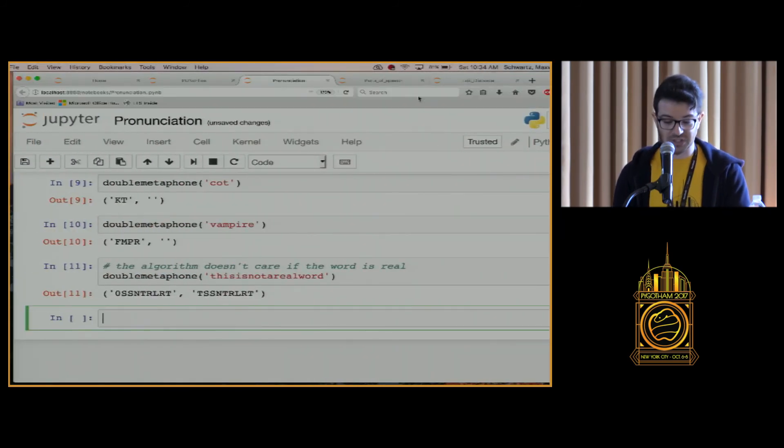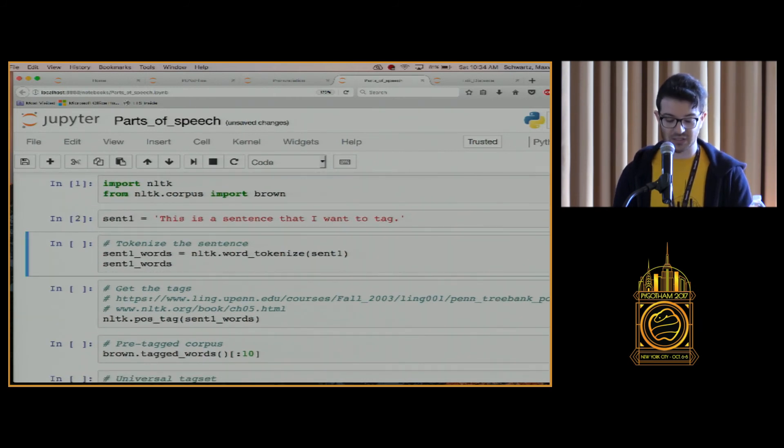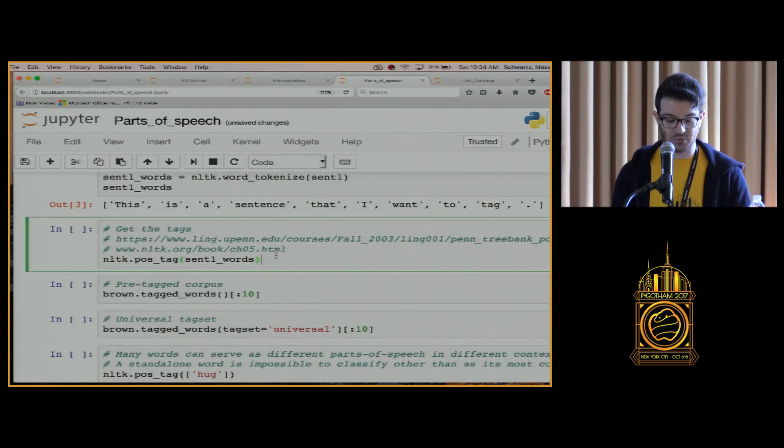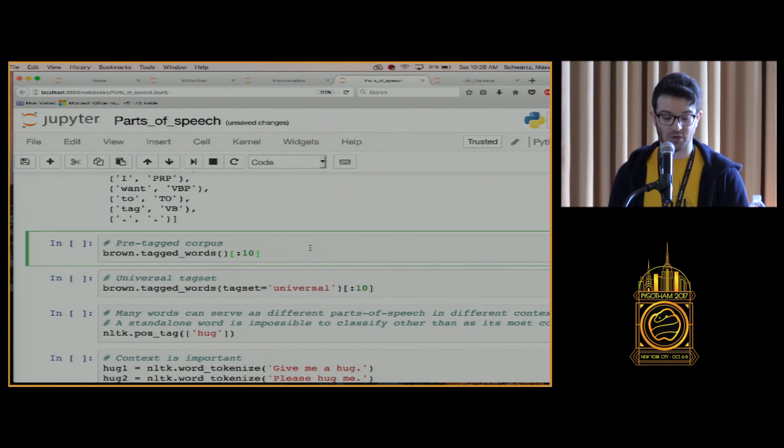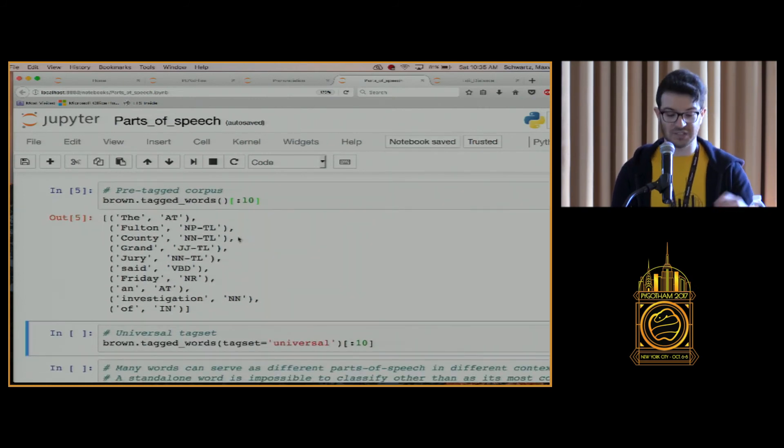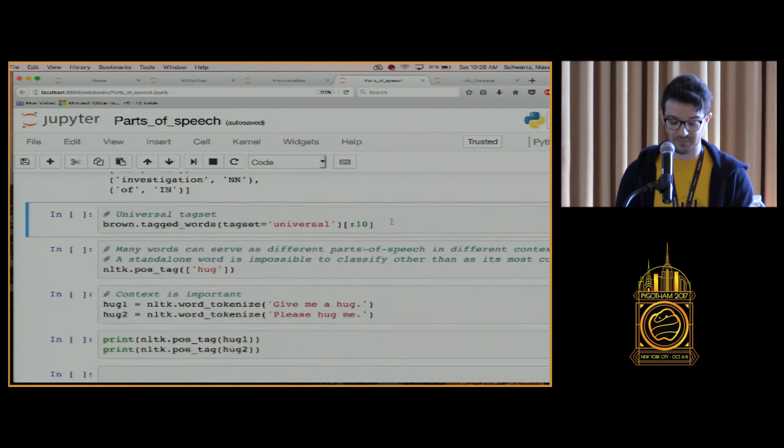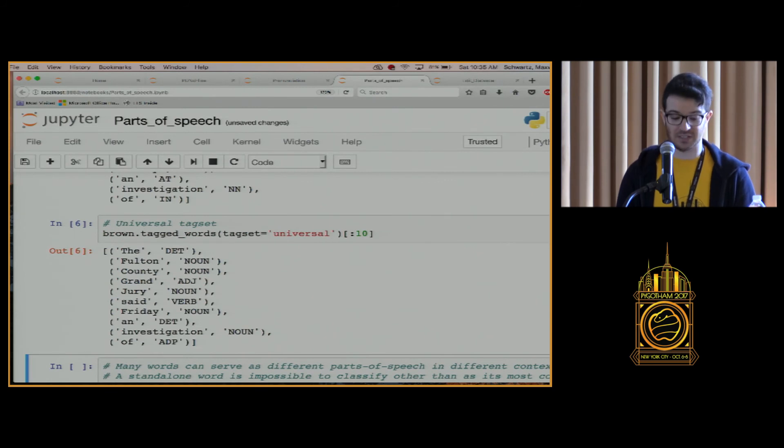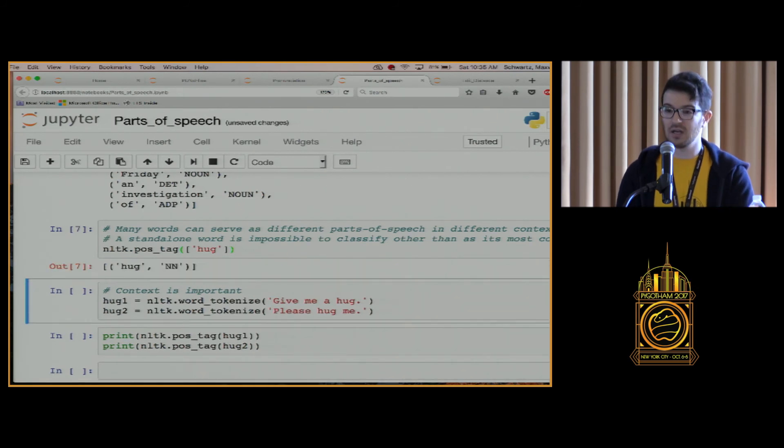We can see some quick versions of that here. The Natural Language Toolkit is one of the options in Python to do this. We can take the sentence, we can tokenize it into its individual words, and we can get its parts of speech tags. The brown corpus, which we can get also from the Natural Language Toolkit, is a corpus of texts from all different genres and has a pre-tagged version, so we can use versions of that as well. We can also get the universal tagset version of that.